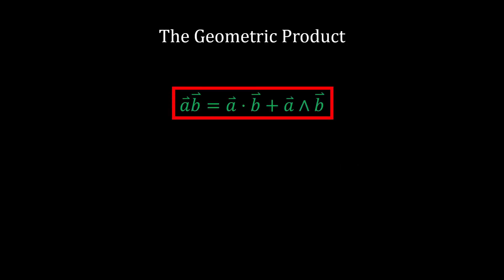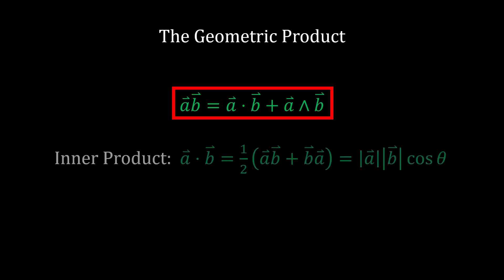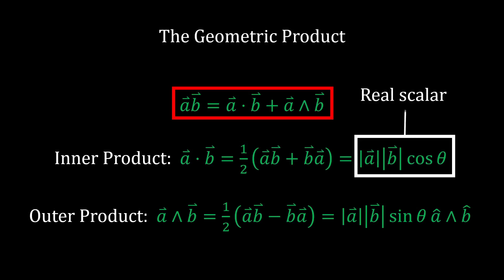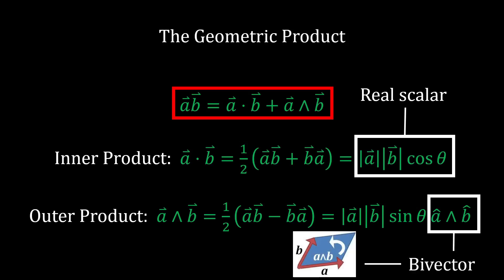The foundation of the geometric algebra approach can be associated with the geometric product. The geometric product allows for the multiplication of two vectors and is the sum of the inner and the outer product between the vectors. The inner product is just the familiar vector dot product and returns a scalar value. The outer product is actually related to the vector cross product, as I will show shortly, but instead of returning a vector, it returns a new object called a bivector. The bivector is the oriented plane spanned by the vectors a and b.